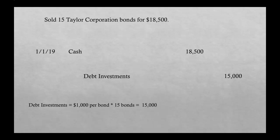You'll notice debits and credits don't equal — we need an extra credit of $3,500. The reason: we sold bonds that on our books were worth $15,000, but we were able to get people to pay us $18,500. So we had a Gain on Sale of Debt Investments for that $3,500 difference.